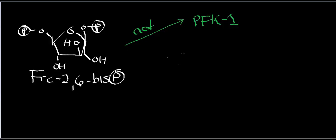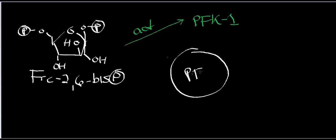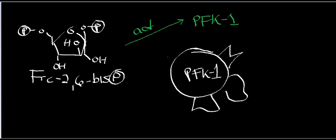On PFK1 — and I want to be very clear it's PFK1, because we're also going to talk about PFK2 — PFK1 has allosteric sites on it. The allosteric inhibitors are ATP and citrate, so I'll draw them in red. ATP is an allosteric inhibitor of PFK1, and so is citrate.